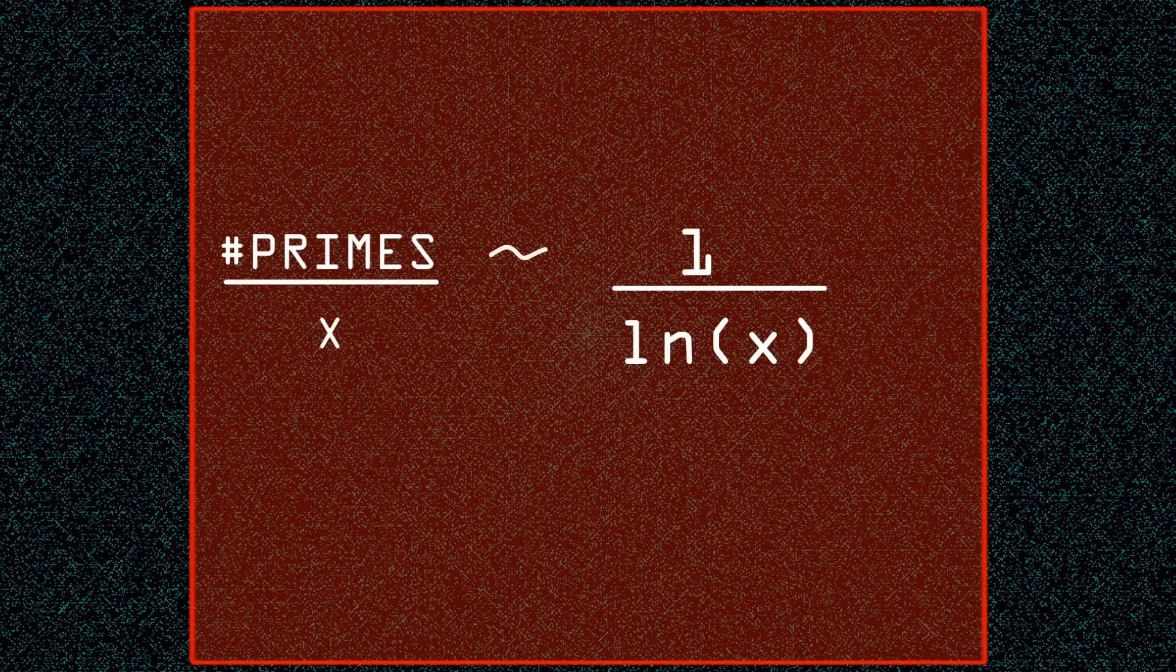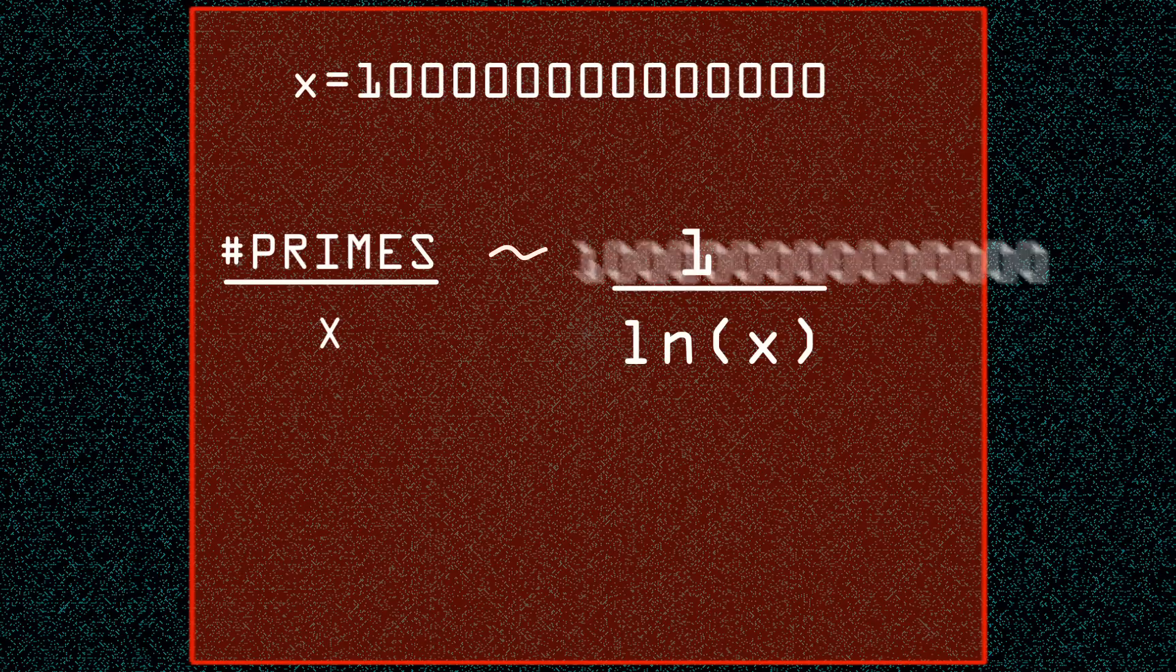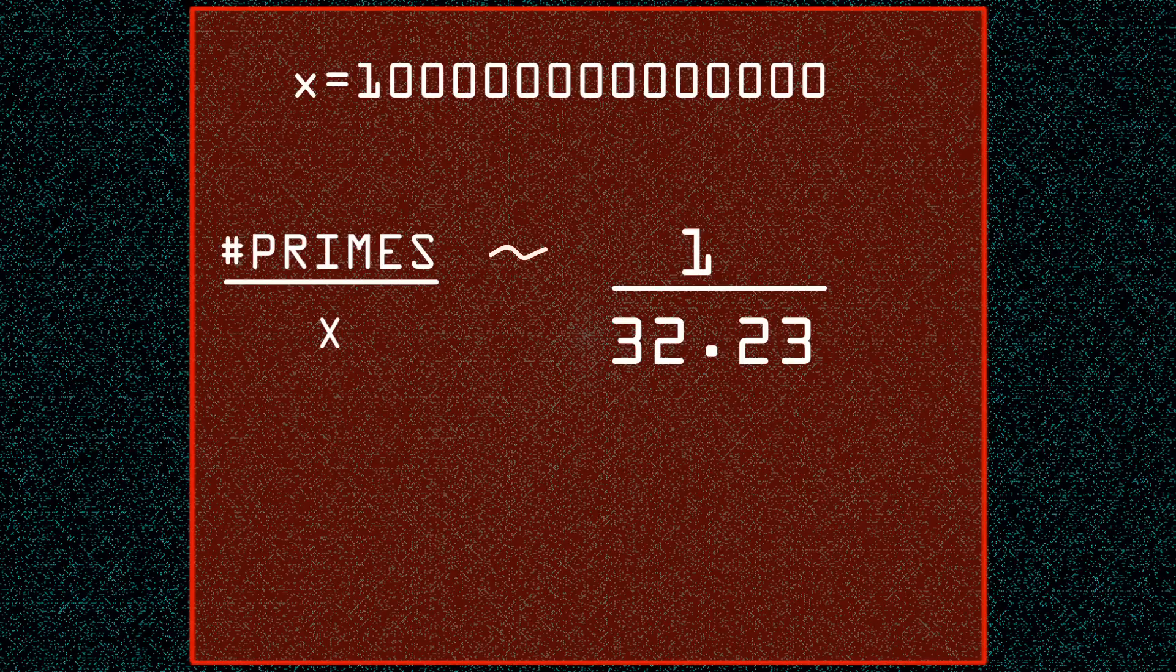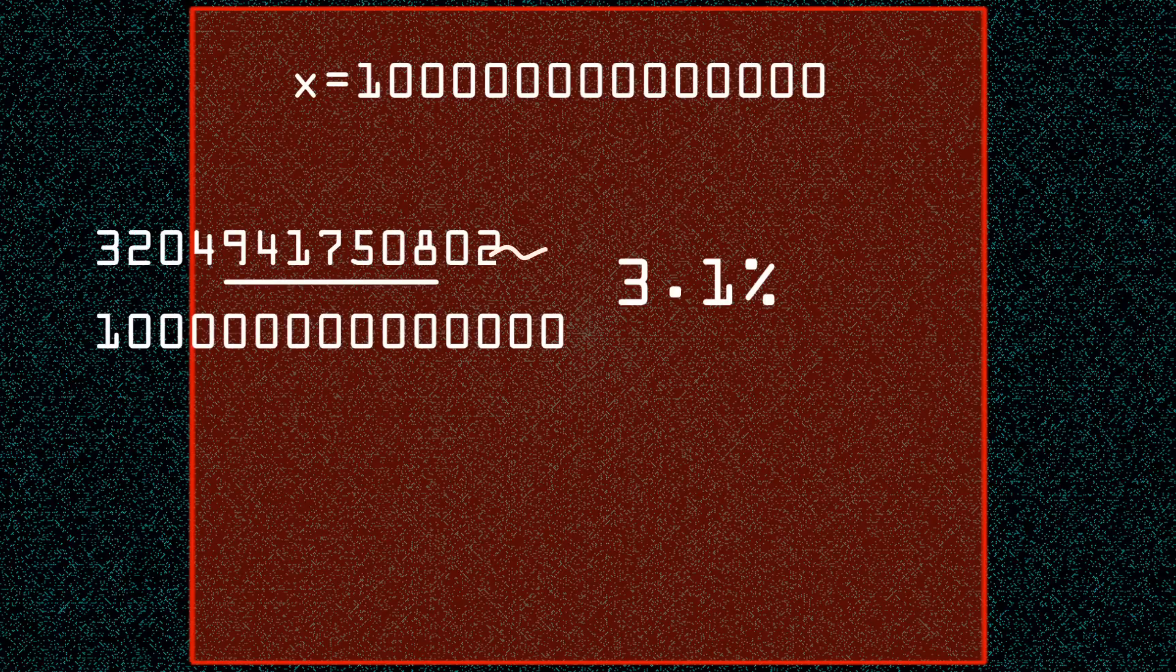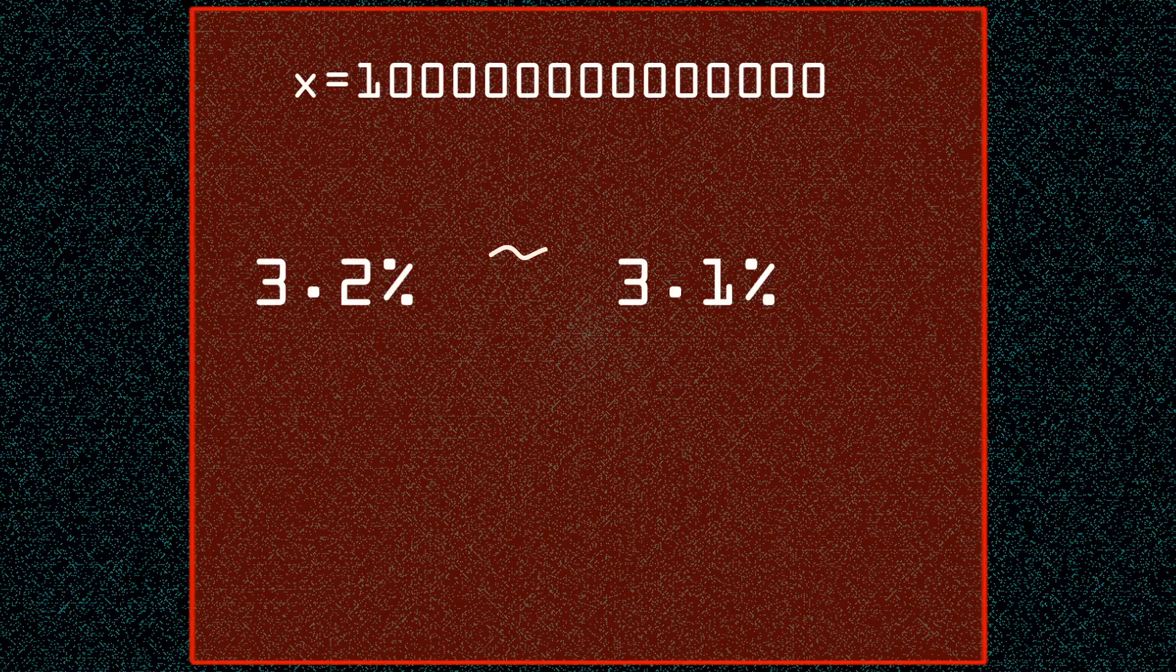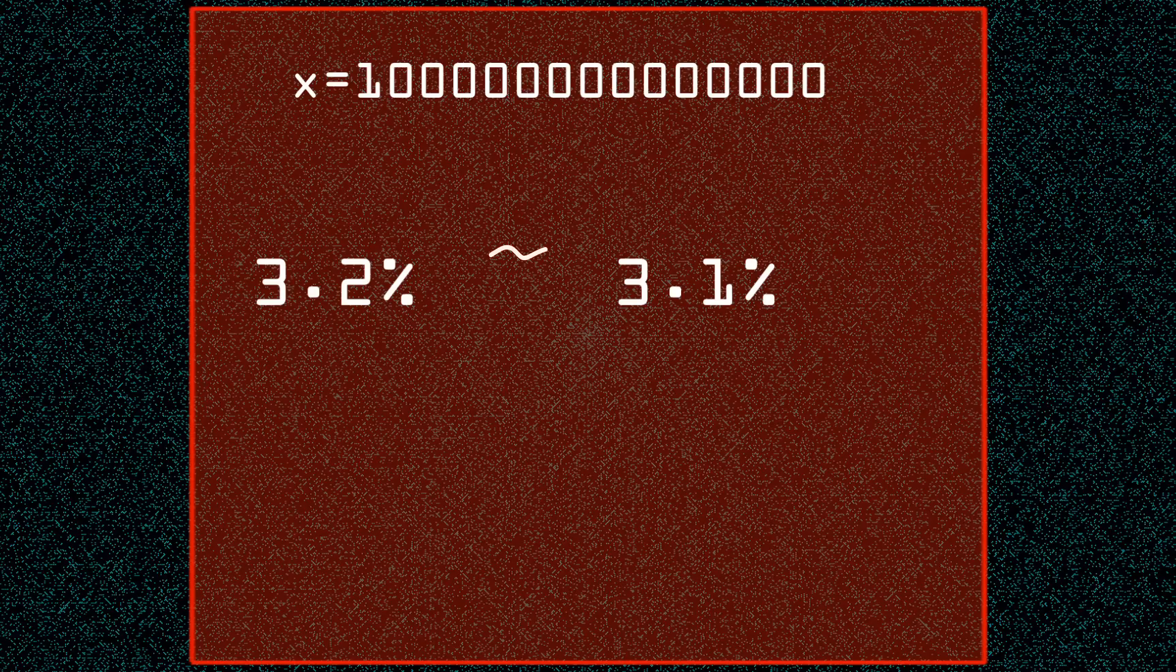So let's say you need to know the density of primes between 1 and 100 trillion. Simple: 1 divided by ln of 100 trillion equals 3.1%. Compare this to the actual result from counting all primes which is 3.2%. This is off by 0.1% and as we check larger and larger numbers the difference approaches zero.